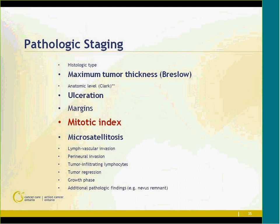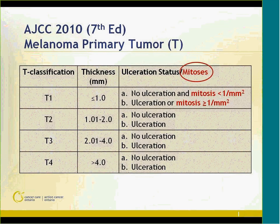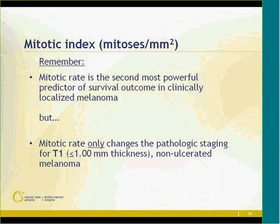The mitotic index is the big change in the new system. It's the second most statistically significant prognostic variable after tumor thickness. However, in terms of changing the stage of a patient, it's only important in T1 lesions. A T1 non-ulcerated lesion with no dermal mitoses is T1A; with any mitosis in the dermis, it's T1B. So mitotic rate is important for database collection and research across all tumor stages, but it only directly affects the T classification for T1 lesions.